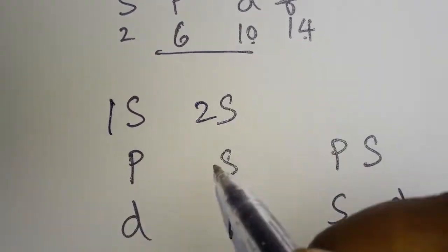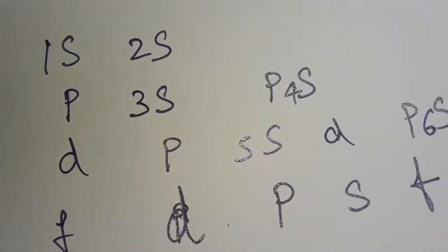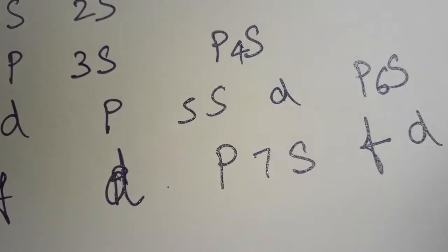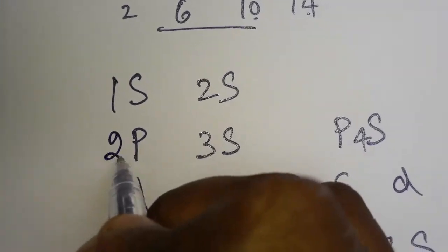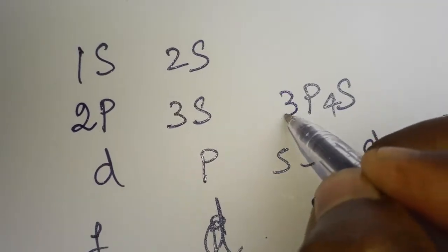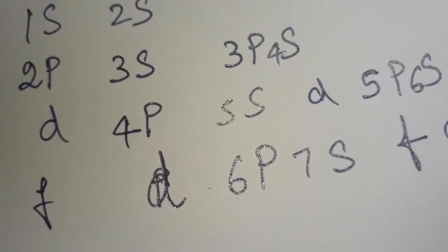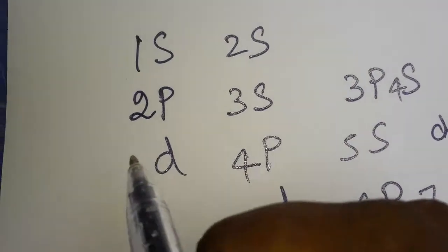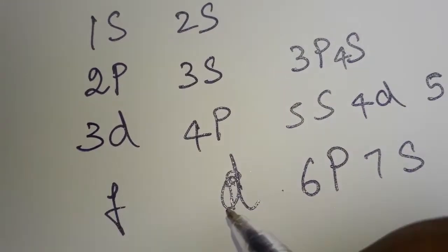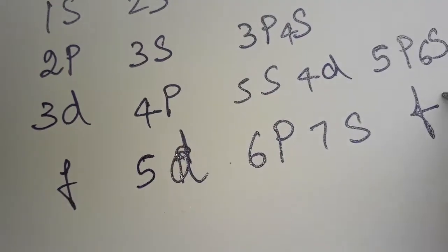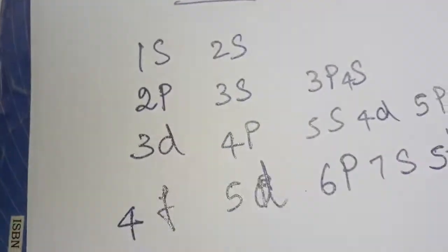For the principal quantum numbers: s starts from 1 — so 1s, 2s, 3s, 4s, 5s, 6s, 7s. p starts from 2 — so 2p, 3p, 4p, 5p, 6p, 7p. d starts from 3 — so 3d, 4d, 5d, 6d. f starts from 4 — so 4f, 5f. This gives us the configuration numbering.